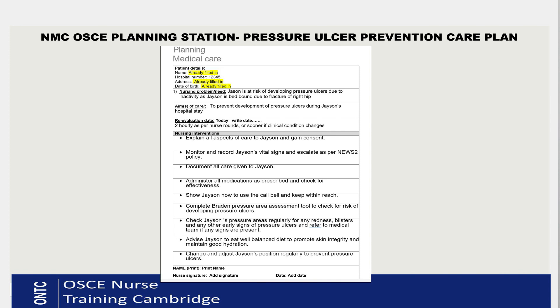For nursing interventions: first, explain all aspects of the care plan to Jason and gain consent — without consent we can't do anything. Next, monitor and record Jason's vital signs and escalate as per NEWS2 policy. Document all care given to Jason. Administer all prescribed medication and check for effectiveness. Show Jason how to use the call bell and keep it within reach so he can ask for help if needed.